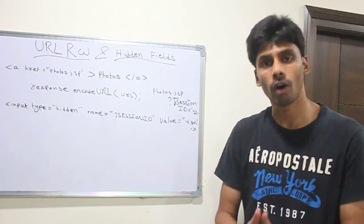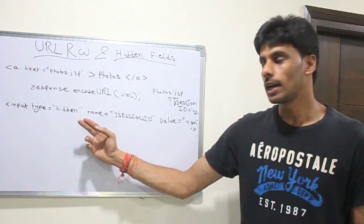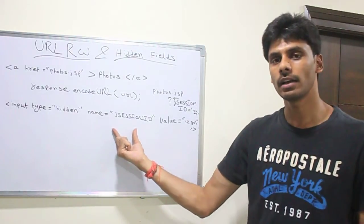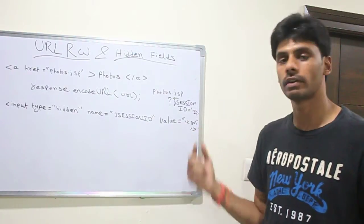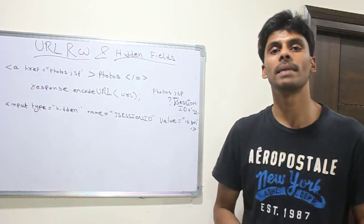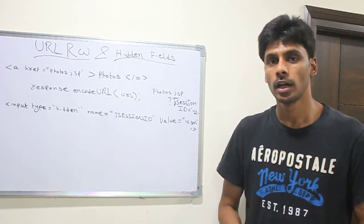But when you are using forms to submit data, HTML forms, instead of clicking on a link, you should use the hidden field. And it could have a unique ID with the name J session ID and the value of it will be the session ID which will be sent to the server when you click on the submit button for a particular form or when the user clicks on the submit button.